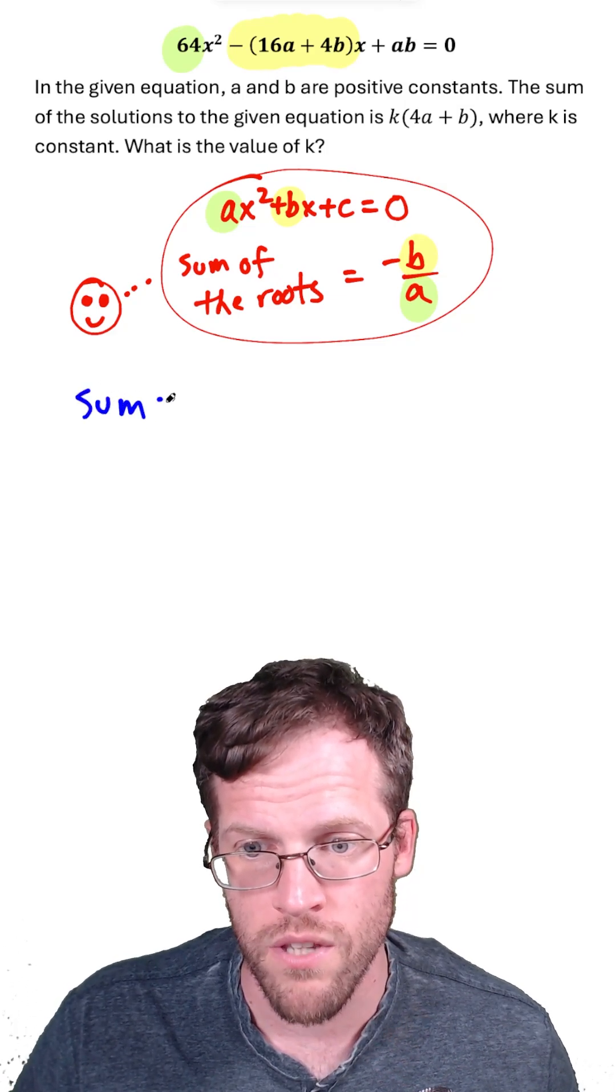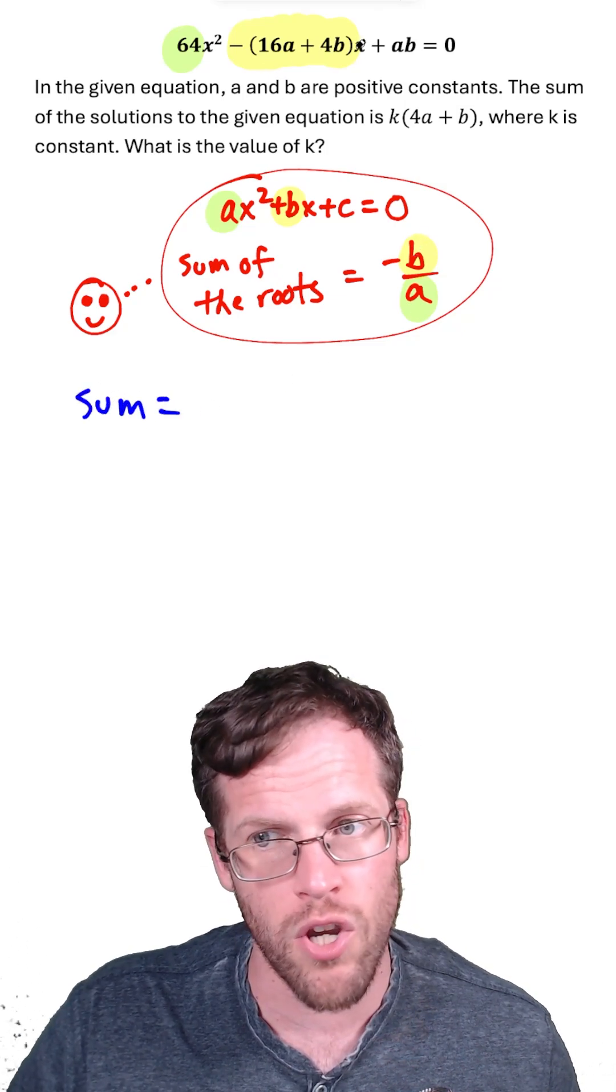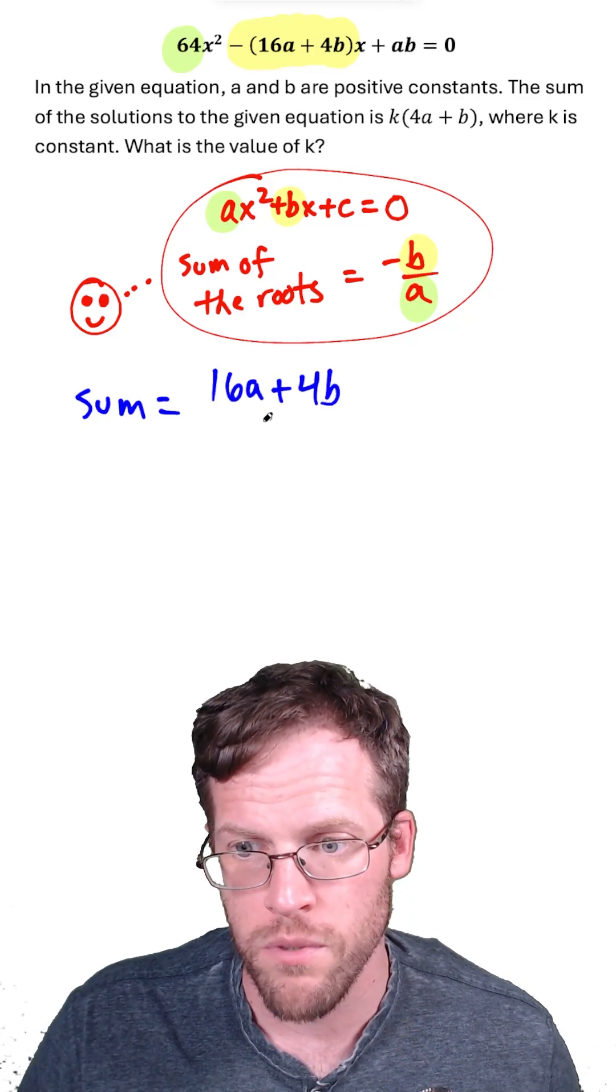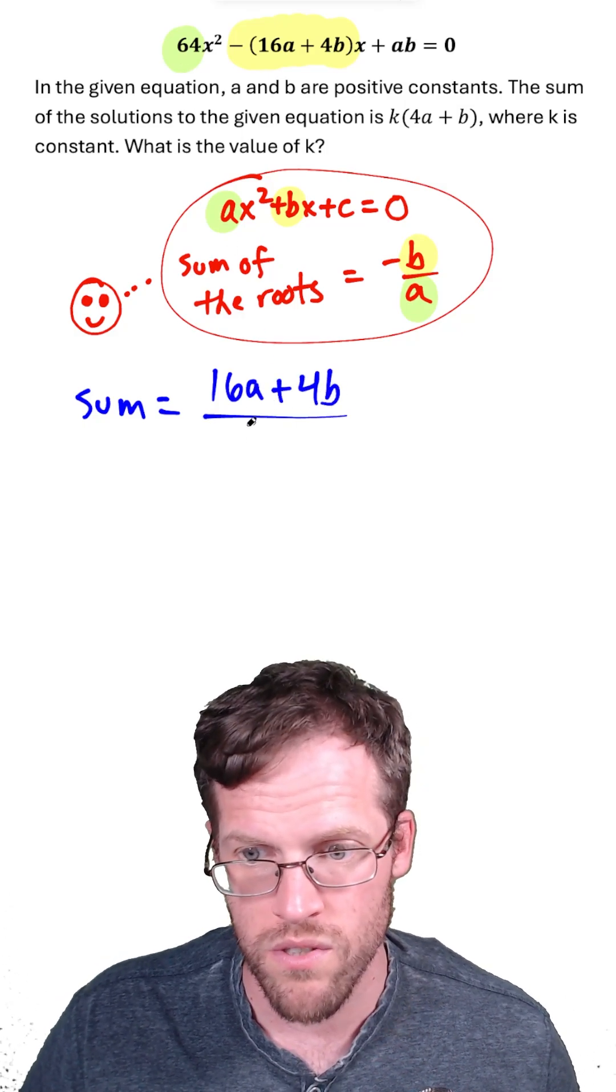So now we could say the sum of the roots is equal to the opposite of the coefficient of x, which would be 16a plus 4b, and then we divide by a, which is equal to 64.